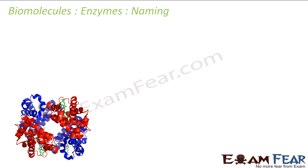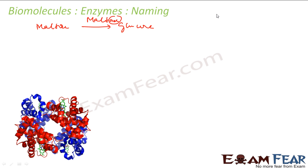Enzymes are generally named after the compound or class upon which they act. For example, maltase is used to hydrolyze maltose — it converts maltose to glucose. The suffix '-ase' is always used at the end of enzyme names. So the name maltase came because it breaks down maltose. The naming of enzymes is based on the work they do or the class of compound they act on.